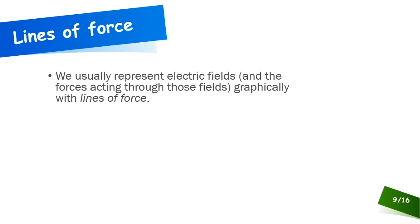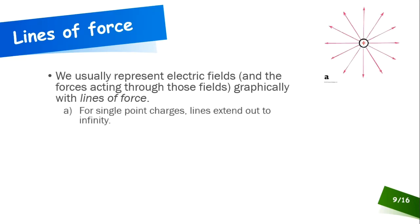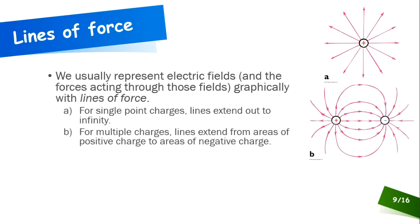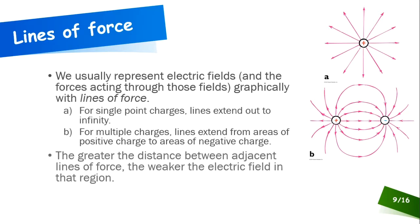We usually represent electric fields with lines of force. For a single point charge, lines extend out to infinity. With multiple charges, lines extend from areas of positive charge to areas of negative charge — arrows on the lines go from positive to negative, following the convention. The greater the distance between adjacent lines of force, the weaker the electric field in that region.